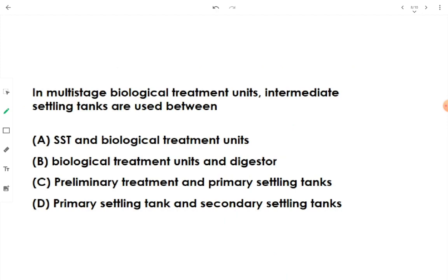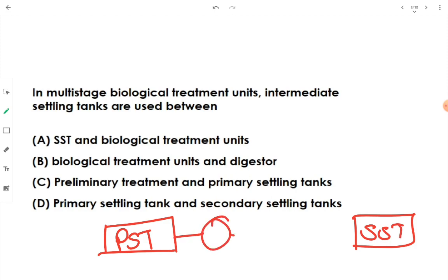Then, in multi-stage biological treatment, intermediate settling tanks are used between. See, whenever we have to use multiple settling tanks, then we will compulsorily install them in between PST and SST. That is, primary settling tank and secondary settling tank. This may be intermediate settling tanks that we might need in case the wastewater is strong or in case we need more efficiency of treatment. Therefore, the answer is option D. PST and SST. In between PST and SST.